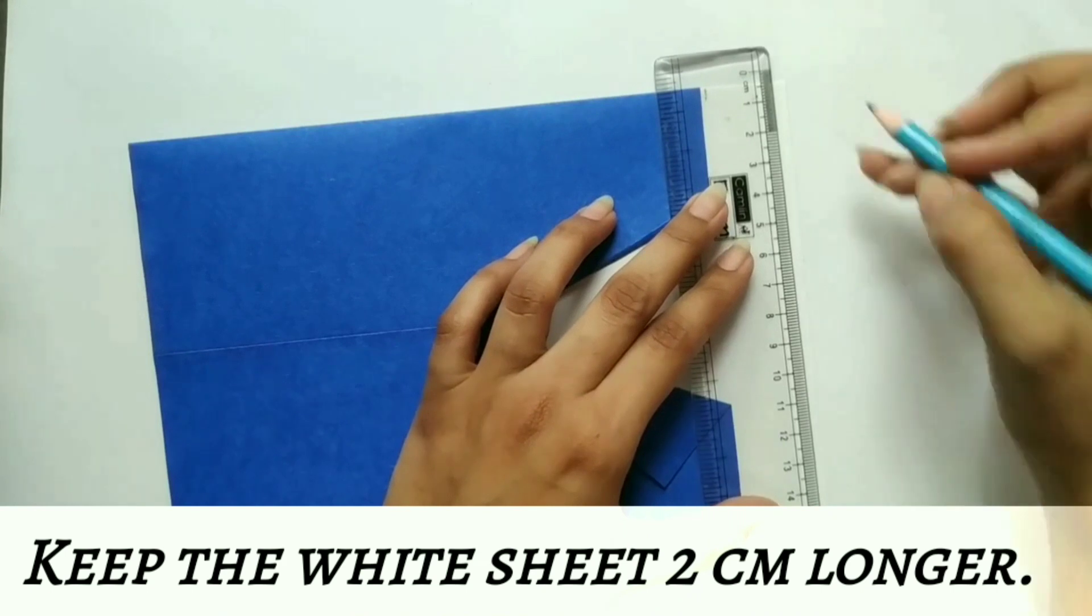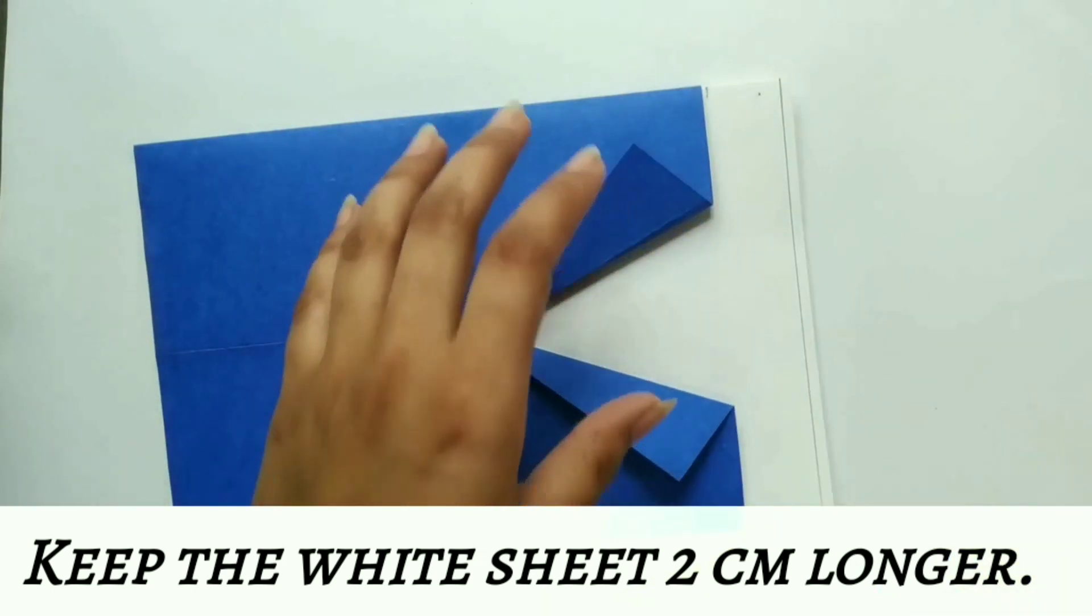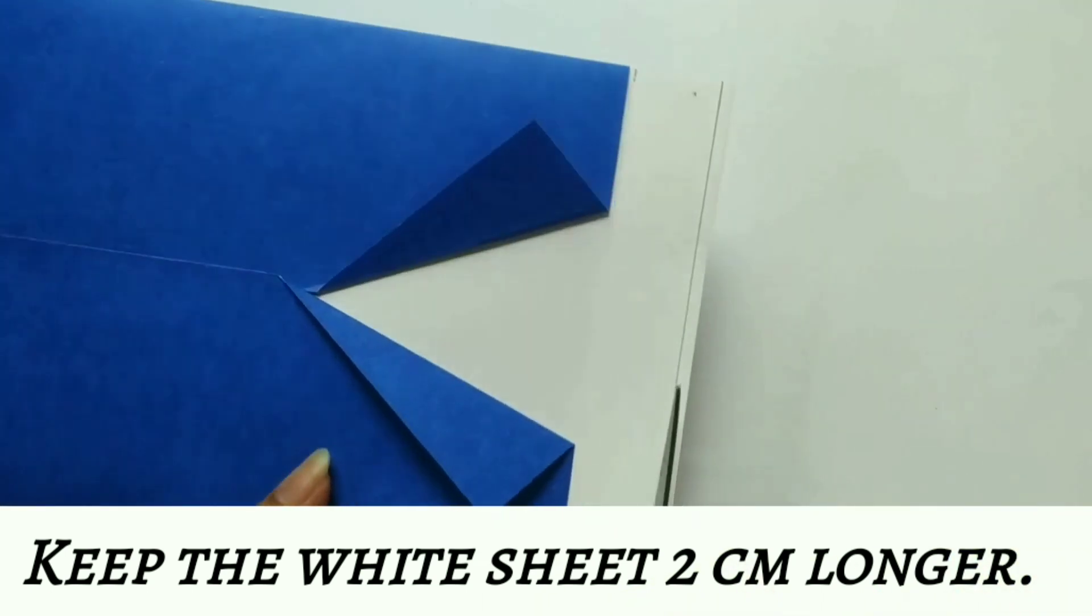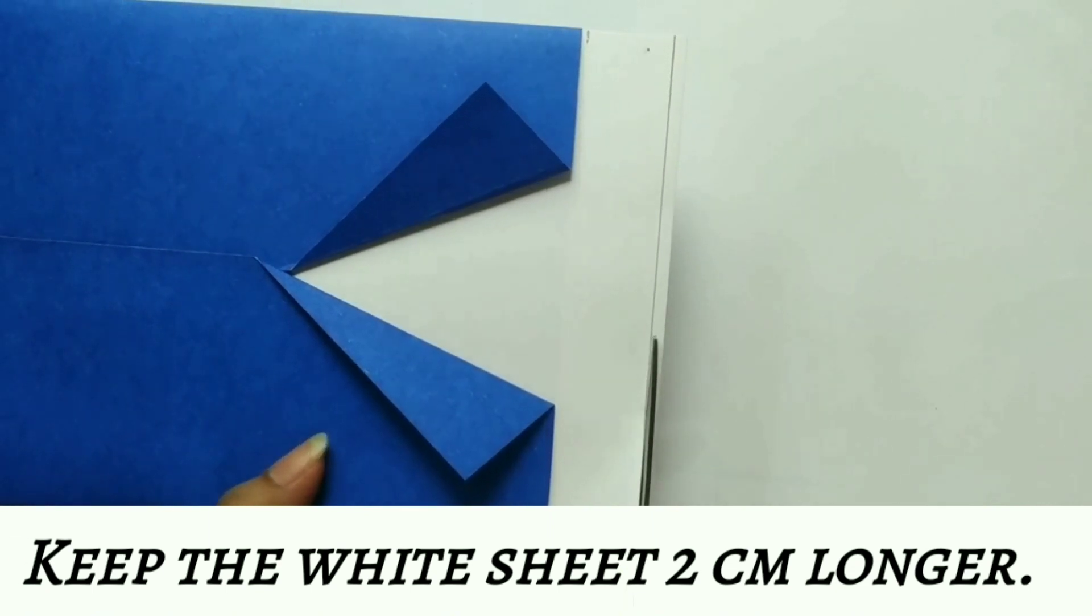Here, I am cutting this white sheet a little more. We have to keep it 2 cm longer than the blazer to make the collar of the shirt.